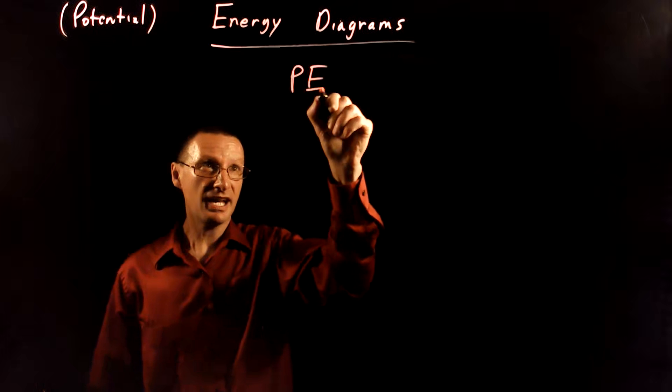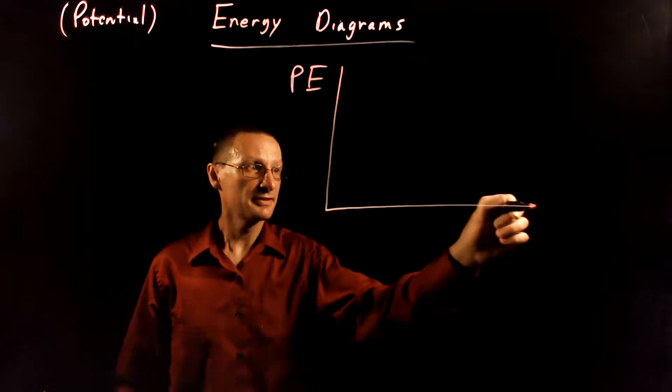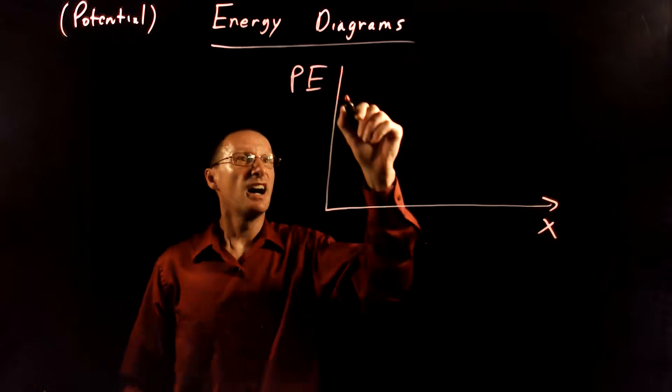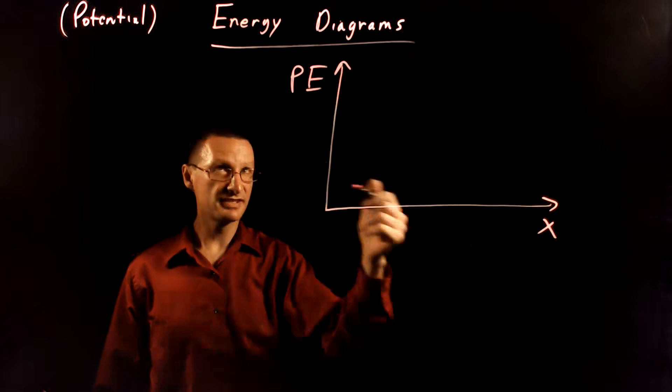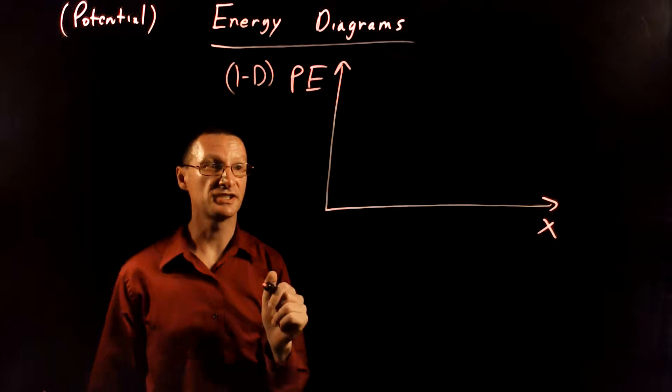Well, it's just if you plot the potential energy as a function of the distance position of an object. And this is a distance in one dimension, so this is going to be a one-dimensional situation here.